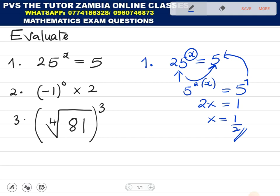Then, negative 1 to the power 0 multiplied by 2. Any number raised to the power 0 is 1 except 0 itself. And this will give us what? 1 times 2 equals 2.